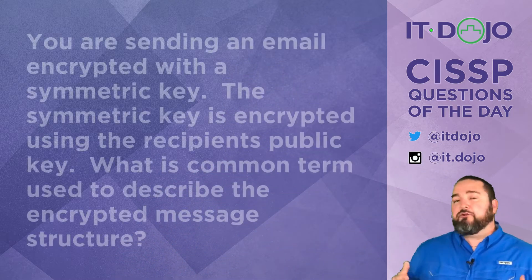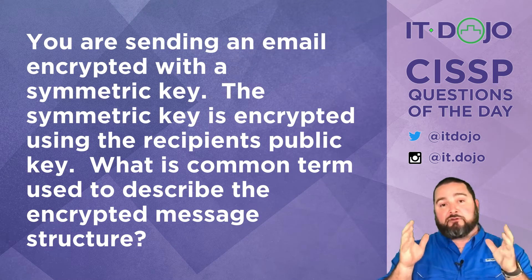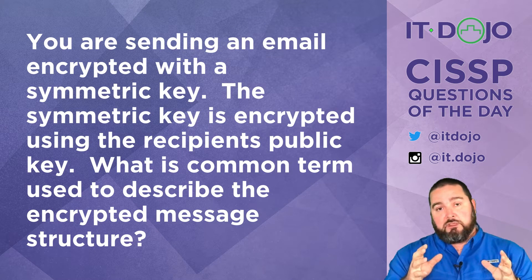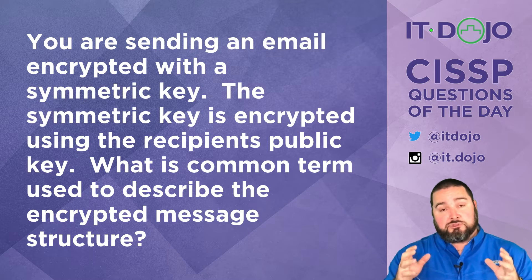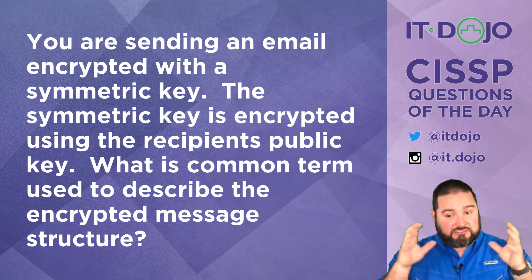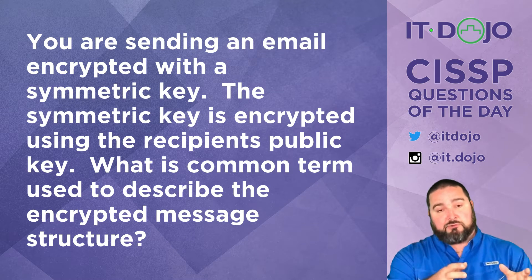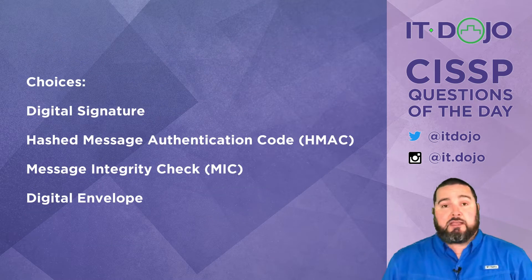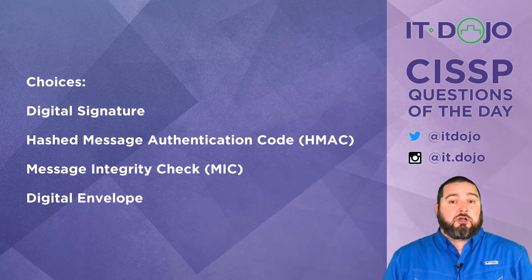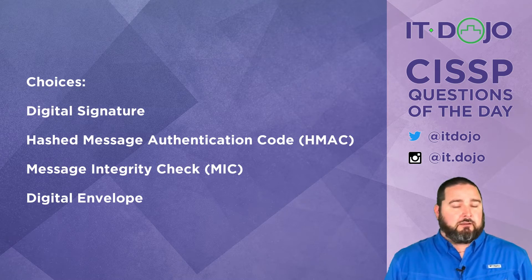Let's dabble with some encryption today. Here's the situation: you are sending a message that has been encrypted using a symmetric key. That symmetric key is encrypted using another key. What is the general term we use to describe this type of data structure — when you have an encrypted message that's encrypted with a key that is included, also encrypted, with the message? Go ahead and look at your answer choices.